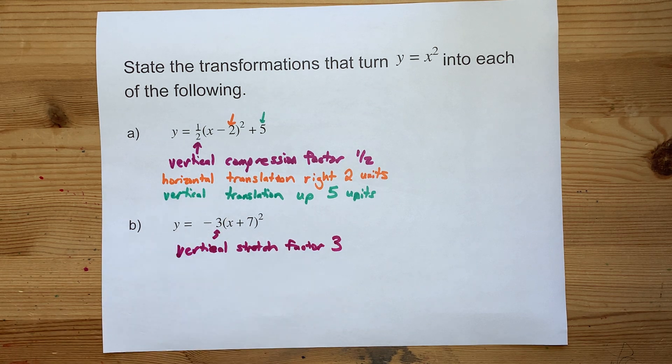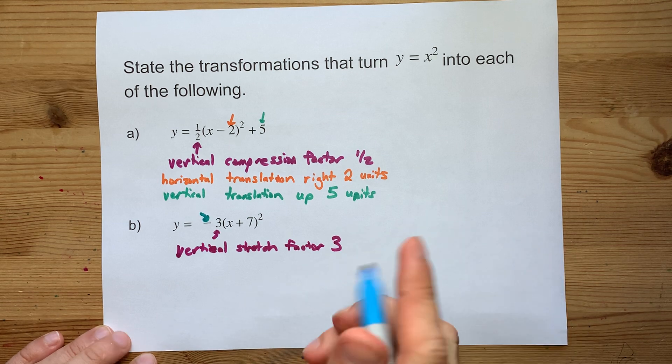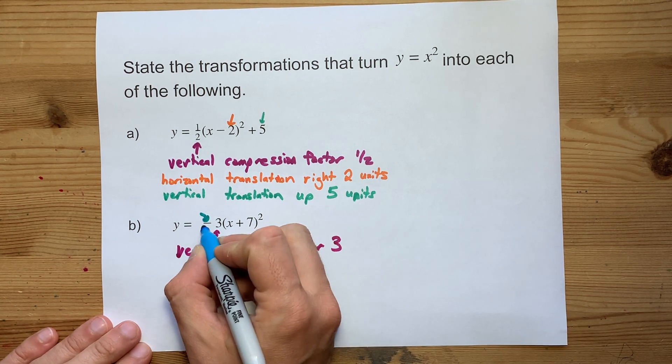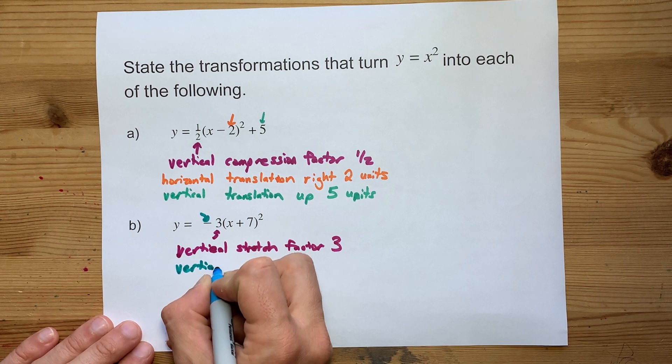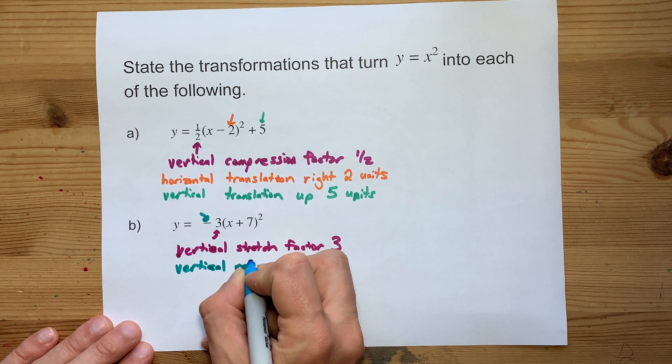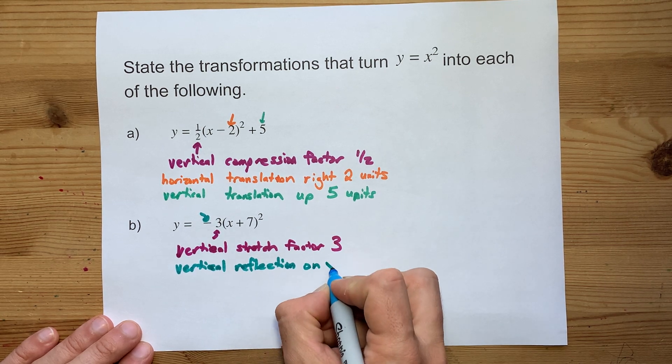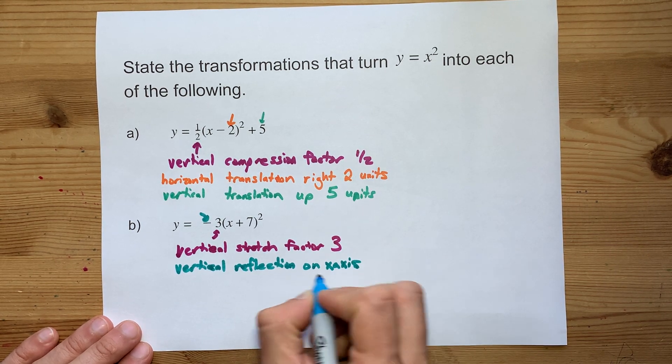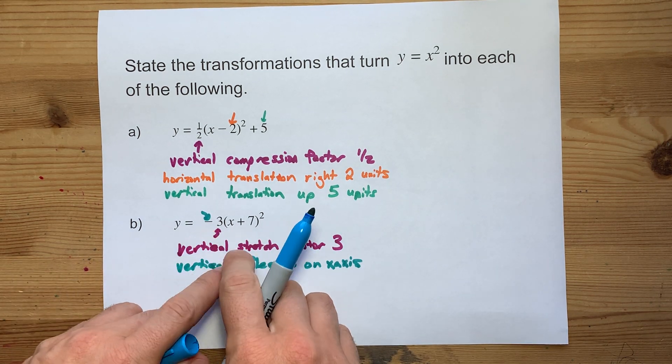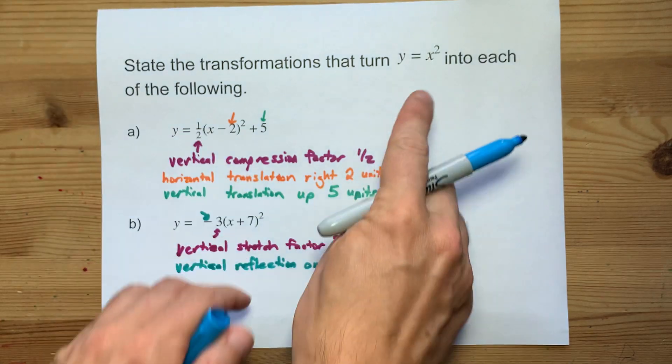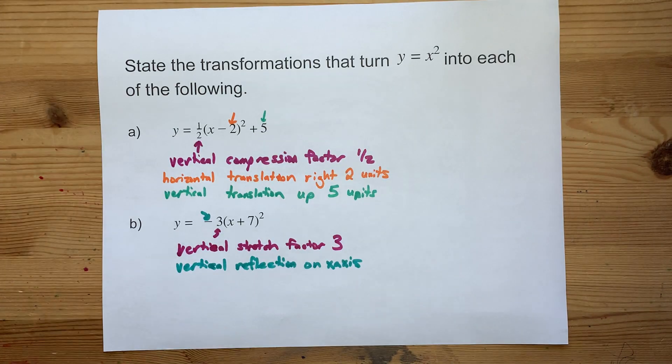Now, this one actually has a negative out front. And the negative manifests itself a different way. A negative out front with the vertical stretch ends up being called a vertical reflection. Some teachers ask you to write that it is on the x-axis. And in fact, I do for my classes. What it means is that instead of the parabola opening up like it originally did, it's flipped and now it opens downward.